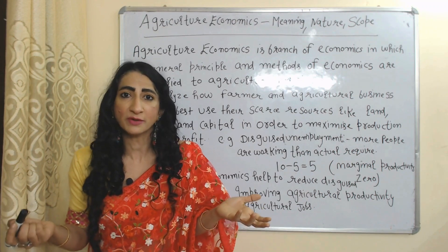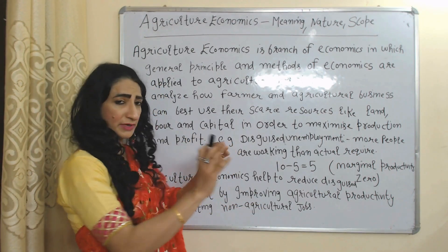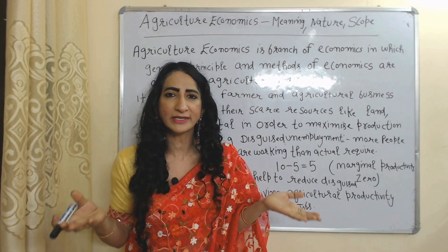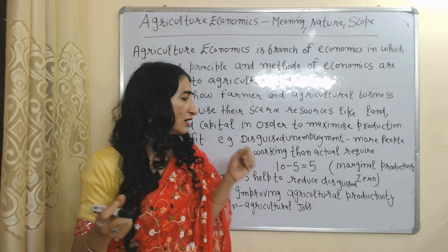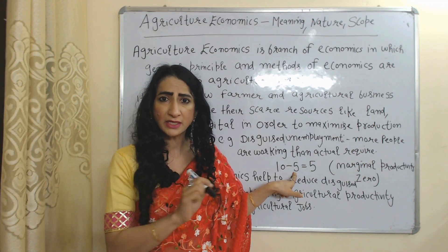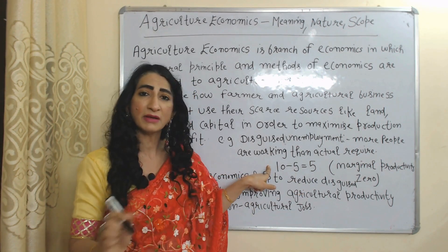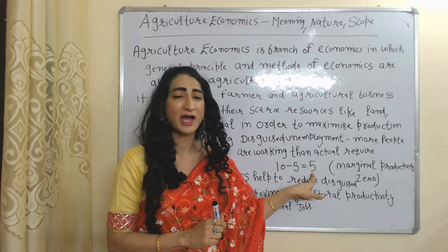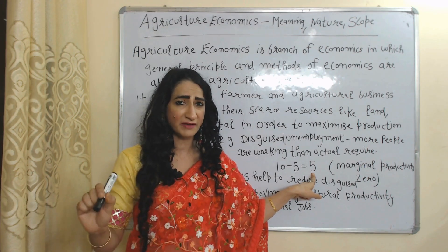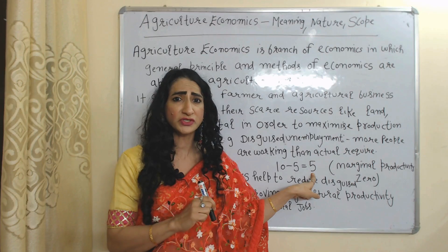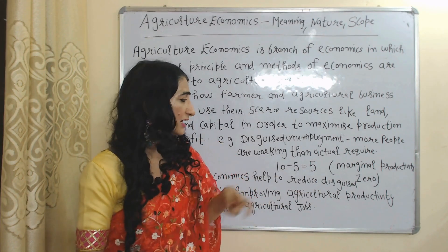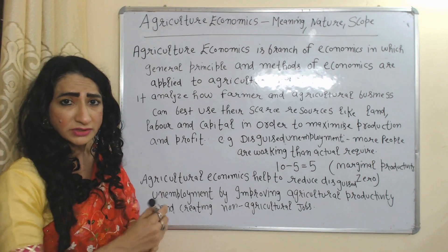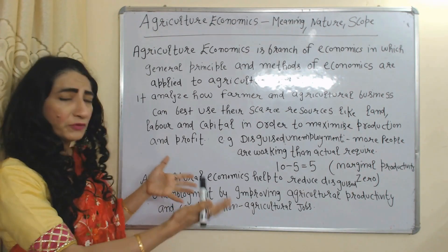For example, disguised unemployment is a major problem of the agriculture sector. Disguised unemployment means more people are working than actually required. For example, if only five people are needed to work a particular piece of land but ten family members are working, the difference of five is called disguised unemployment — because these five are not contributing to production. In economic terms, the marginal productivity of these five people is zero. Agricultural economics helps reduce disguised unemployment by improving agricultural productivity and finding non-agricultural jobs.